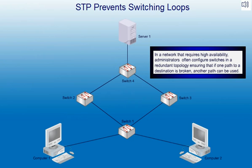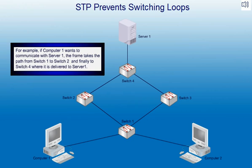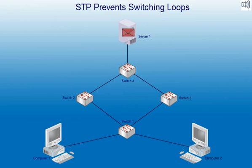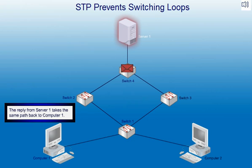In a network that requires high availability, administrators often configure switches in a redundant topology, ensuring that if one path to a destination is broken, another path can be used. For example, if Computer 1 wants to communicate with Server 1, the frame takes the path from Switch 1 to Switch 2, and finally to Switch 4, where it is delivered to Server 1. The reply from Server 1 takes the same path back to Computer 1.